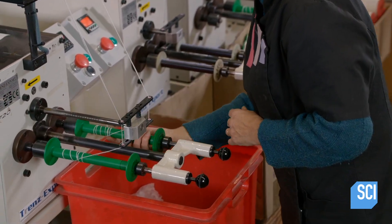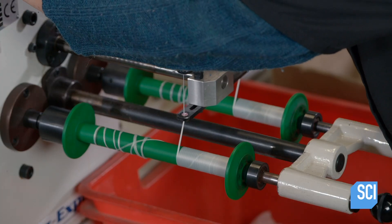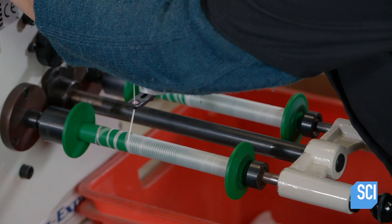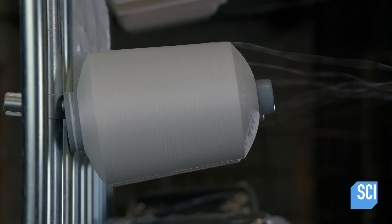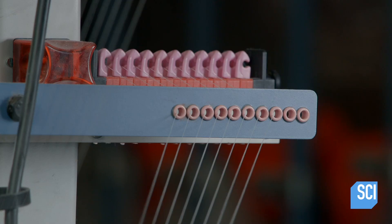Each group of eight strands will produce one thicker polyester thread. She programs the machine to wind a specific length of it. Each cone holds enough fine thread to wind a 71-mile-long thick thread.